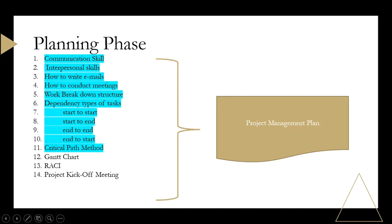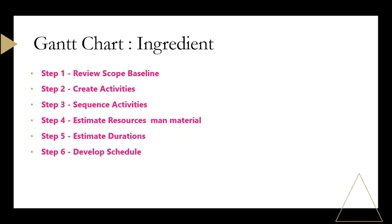The things that you are seeing in color are those activities which we have already completed. Many times when we talk about an activity, we talk about the ingredients. To complete a Gantt chart, what are the things required? The first thing is scope baseline — your project goal is basically your scope baseline.